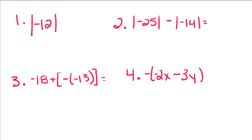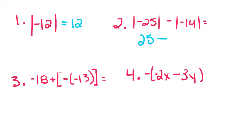Now we're going to do some examples. I have negative 12, and I want the absolute value of negative 12, so our answer is going to be 12. Next, I have the absolute value of negative 25, which is 25, minus the absolute value of negative 14, which is 14. If I subtract those two, I'll get 11.